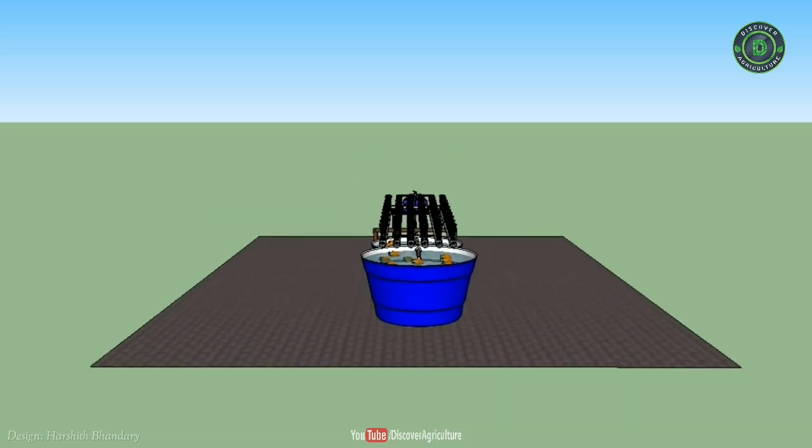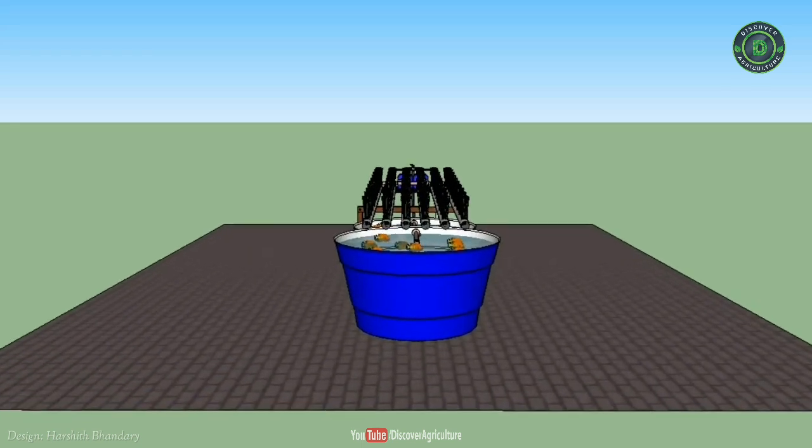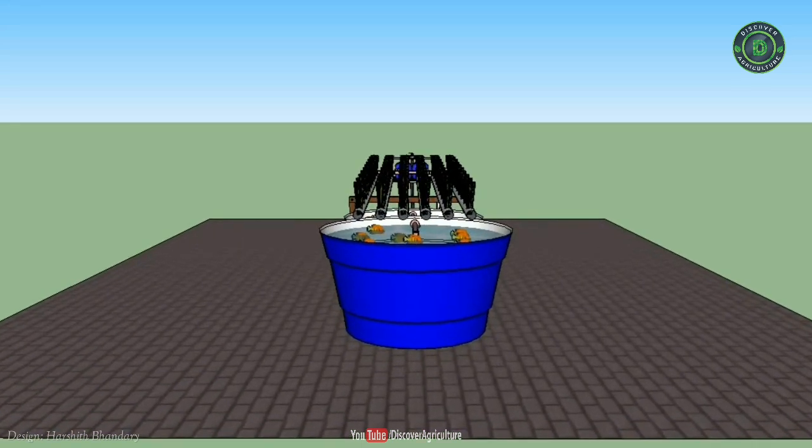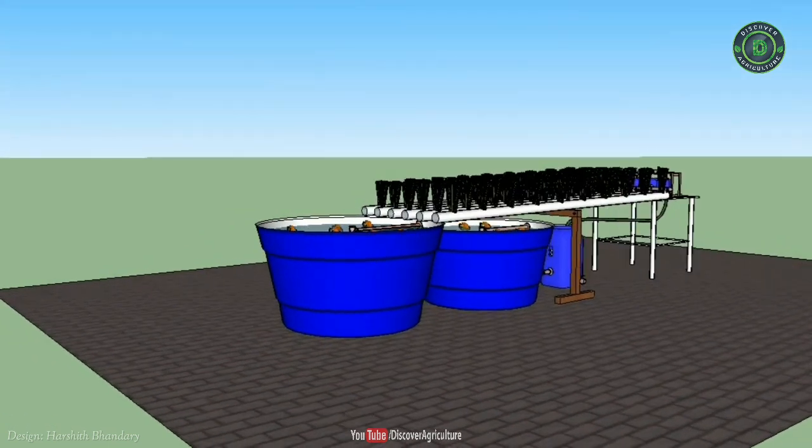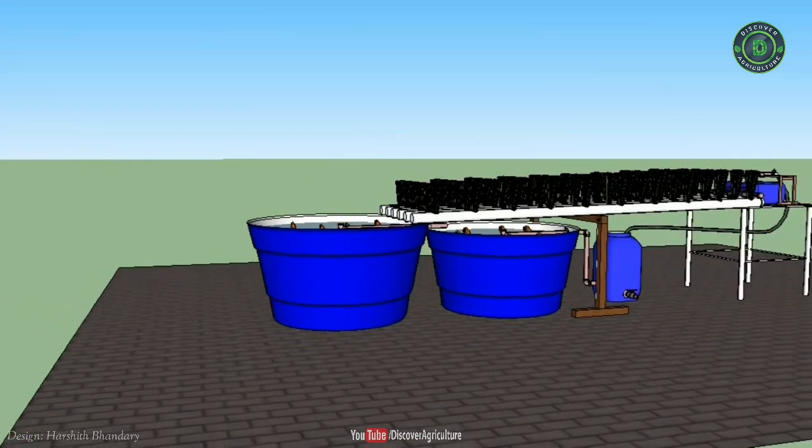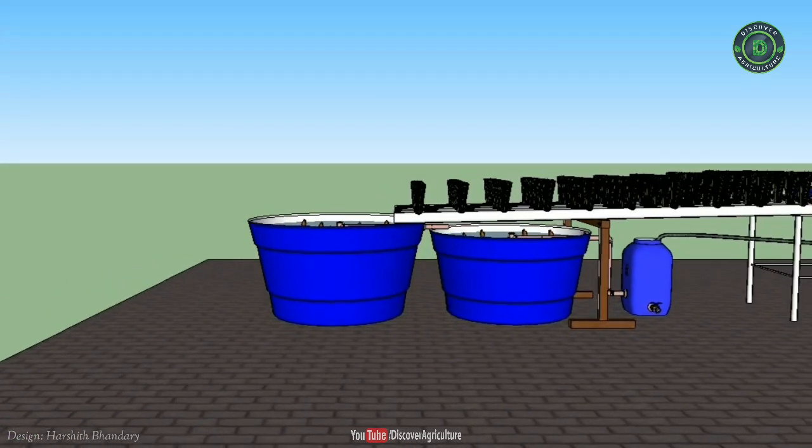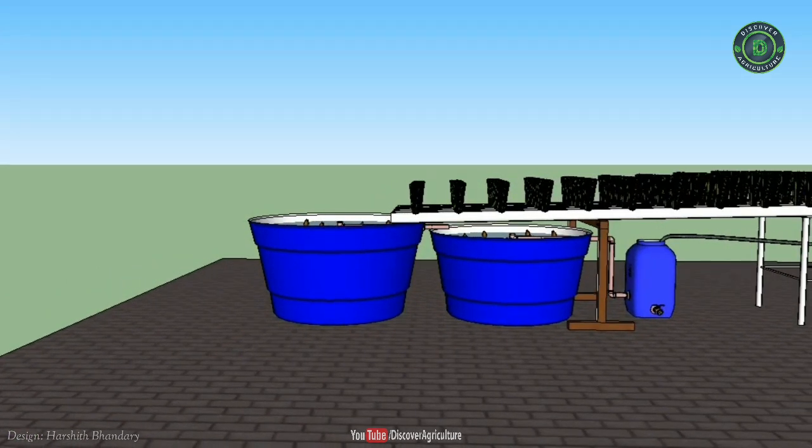Aquaponics systems are inherently completely organic. They are 4-6 times more productive and use 90% less water than conventional gardens. Other advantages include no weeds, fewer pests, no risk of plant dehydration, no additional fertilizing, bending, digging, or heavy lifting.